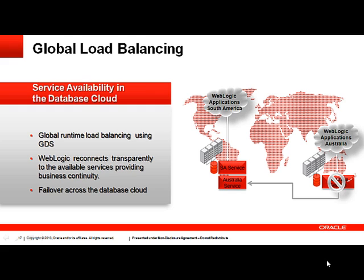Global Load Balancing of Services. GDS, or Global Data Services, provides service availability in the database cloud. A global service is a service available in the database cloud across regions. The global data services framework allows runtime load balancing and failover of these global services. When there is heavy load and a global service is available in another region, the GDS framework will notify through a FAN event to Active Grid Link and a new connection will be made to the less loaded service. When there is a database failure, the GDS framework will notify Active Grid Link through a FAN event that the service is available and a new connection is made to the surviving service. WebLogic Server applications do not need to be restarted on failure, providing business continuity.